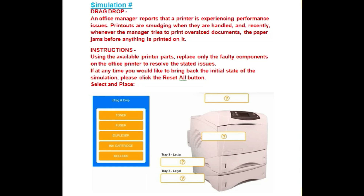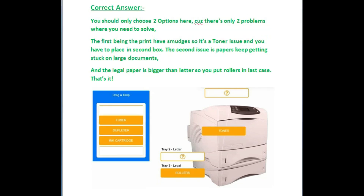So let's go to the correct answer for this simulation. You should only choose two options here because there are only two problems to solve. The first is that the print has smudges — that is a toner issue — and you have to place it in the second box. As you can see in the picture, the toner is in the second box.